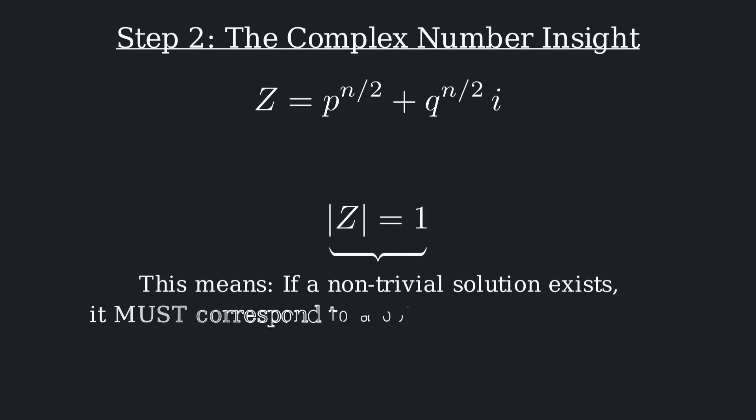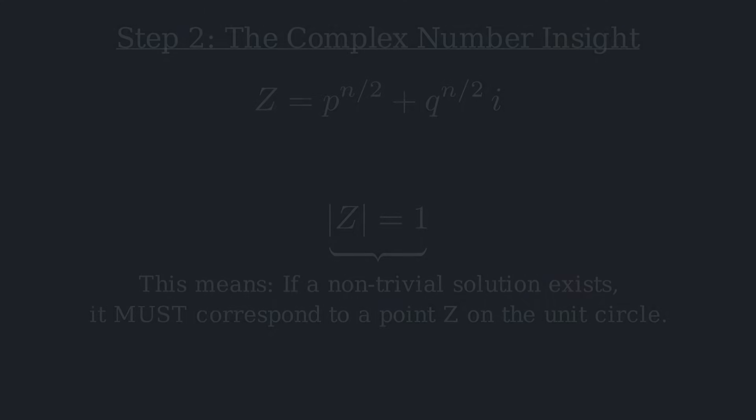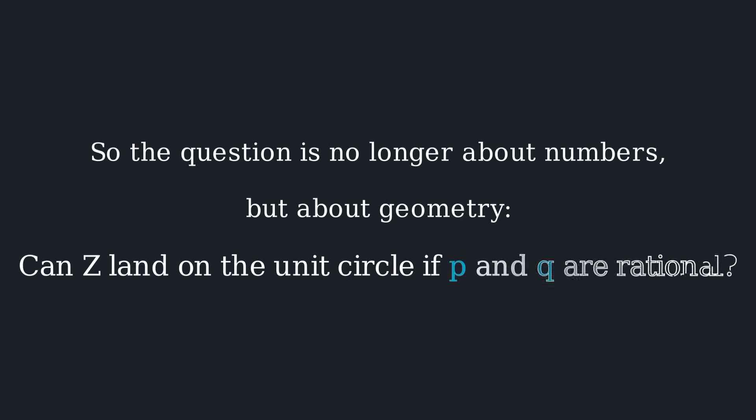This has a critical implication. If a non-trivial solution exists, it must correspond to a point z on the unit circle. So the question is no longer about numbers, but about geometry. Can z land on the unit circle if p and q are rational?